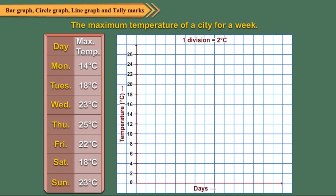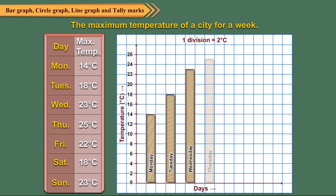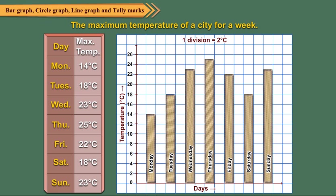Leave one division from the vertical axis and draw a rectangular bar to represent the temperature on Monday. Now draw bars to represent the temperatures of other days of the week, leaving equal gap between each bar. Shade the bars. Write the title and scale on the top of the graph.